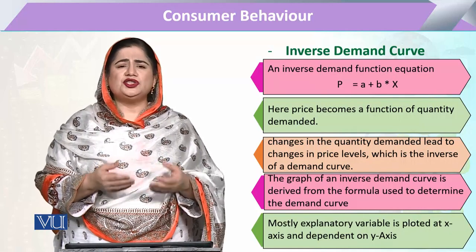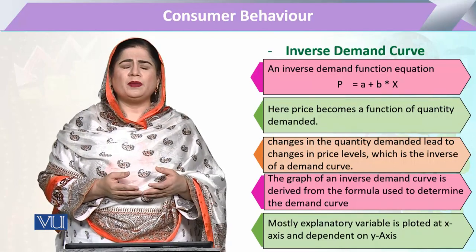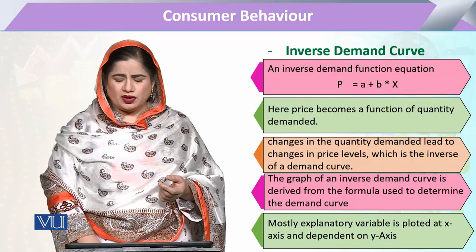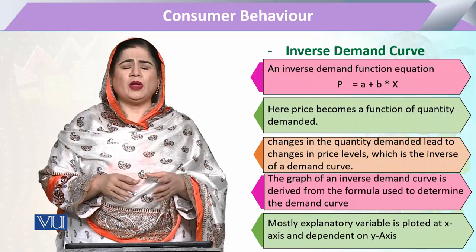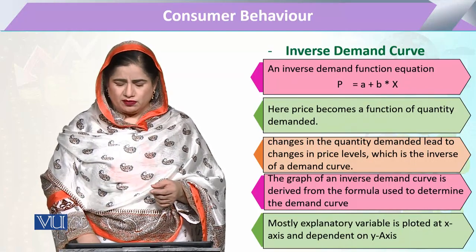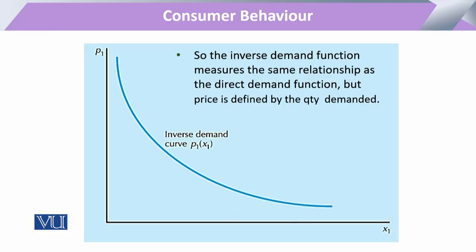Now the position of the explanatory variable has been given to the dependent variable, and in this way our focus has shifted from price to quantity demanded. In most models, the explanatory variable is shown on the x-axis and the dependent variable on the y-axis. So in this inverse demand function, we have shown quantity demanded on the x-axis and price — the dependent variable — on the y-axis. This inverse demand function explains the same relationship as the direct demand function, but reverses the positioning of the dependent and explanatory variables, and here price is now defined by quantity demanded.